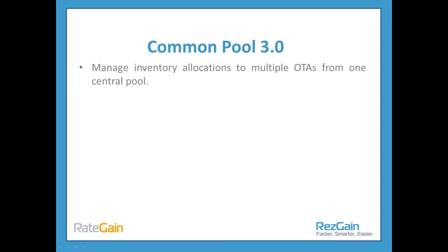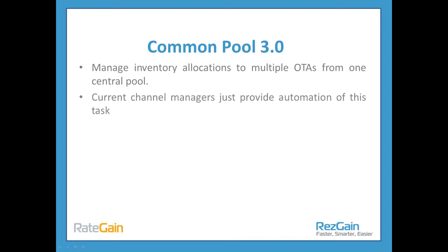One of the first ways of making your lives easier is using a common pool of inventory — this is about managing inventory allocations to multiple OTAs from one central pool. Instead of giving each OTA five or ten rooms, you say I have 40 rooms I'm willing to sell to OTAs on a first-come, first-served basis. As soon as a room is taken, it updates every other OTA to say there's one less in the pool, giving you constant, correct inventory management across all your OTA partners.